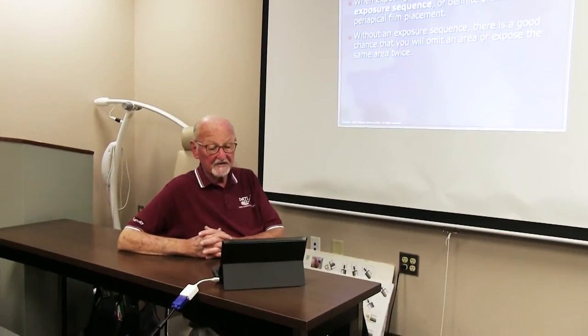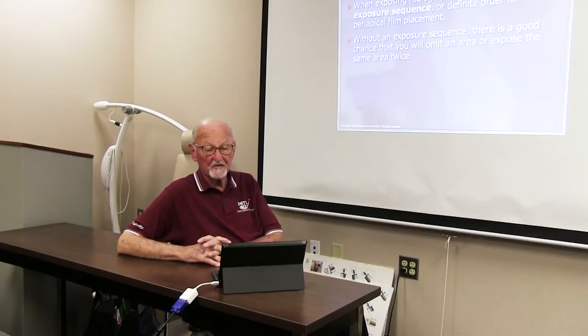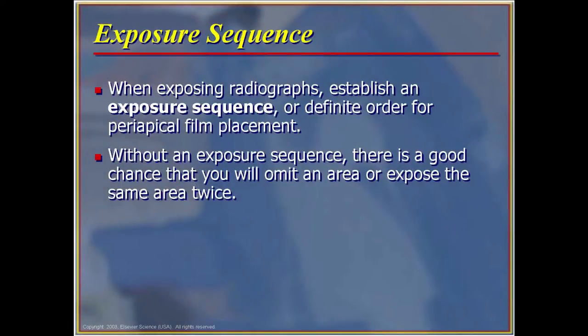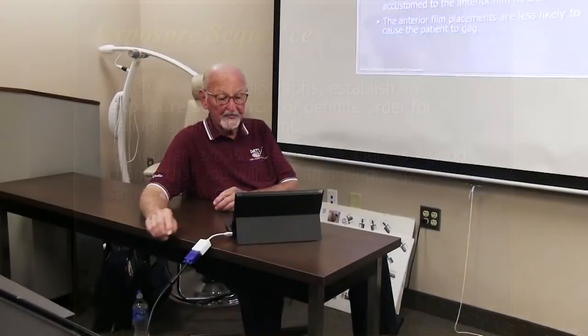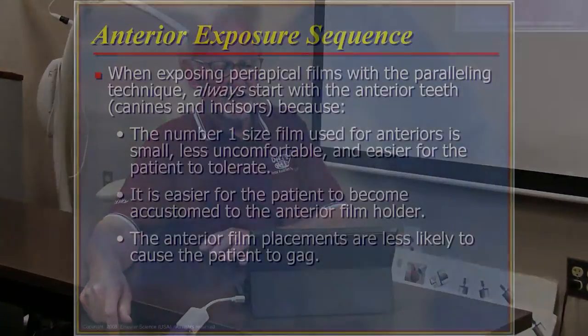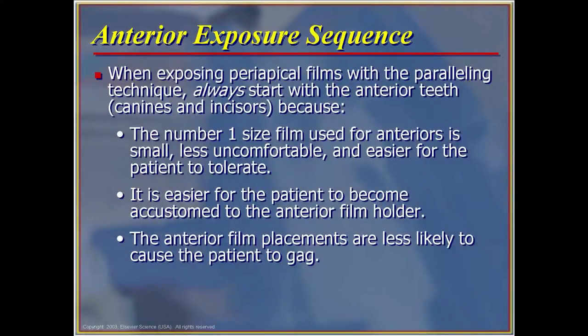When exposing radiographs, establish an exposure sequence or a definite order for periapical film placement. Without a proper sequence there is a good chance that you will omit areas or expose the same area twice. When exposing periapical films with the paralleling technique, always start with the anterior teeth first — canines and incisors — because the size 1 film used for anteriors is small and less uncomfortable and easier for the patient to tolerate. It is easier for the patient to become accustomed to the anterior film holder, and anterior film placements are less likely to cause the patient to gag.